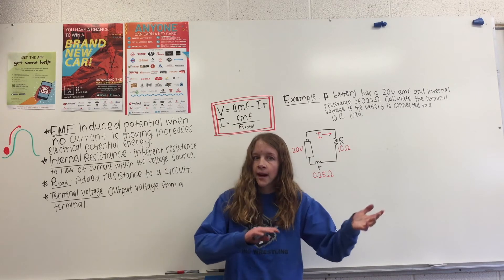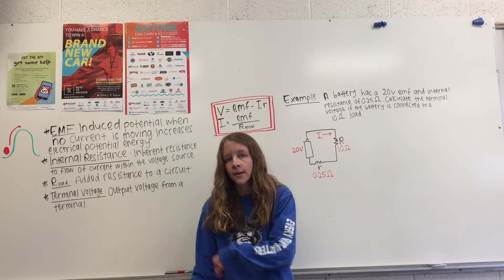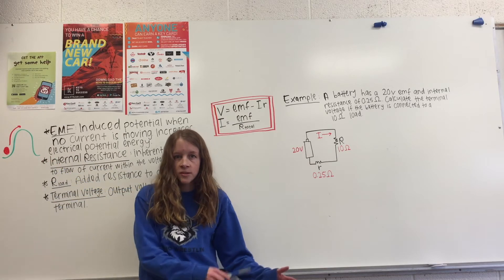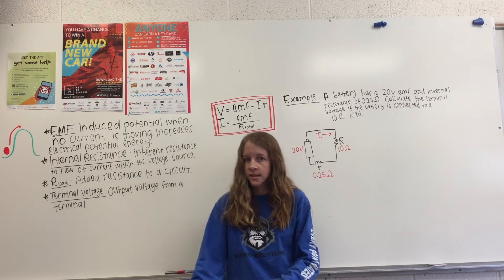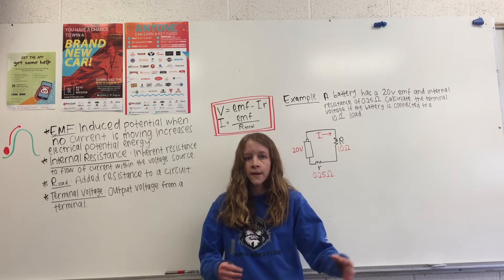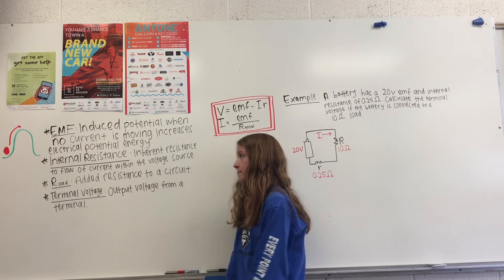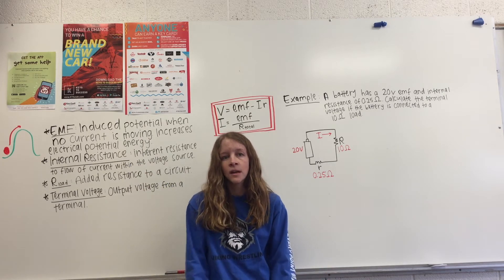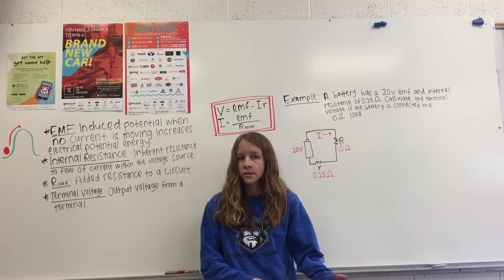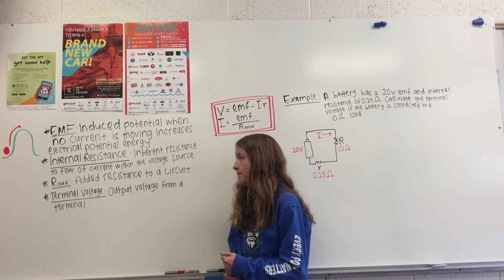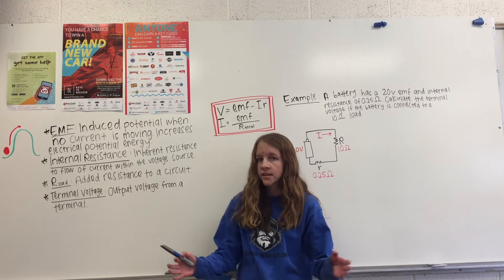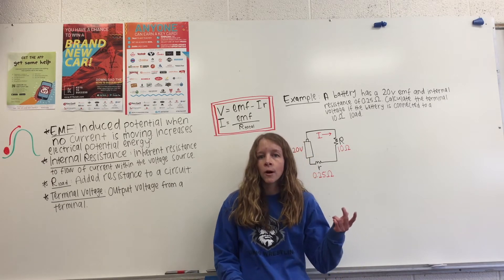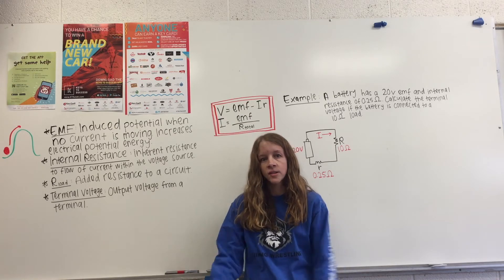On the other side of that, resistance is going to decrease the potential energy. So if the ball was falling down the hill, then it would be losing potential energy, and that's what resistance does. We're going to be using two different kinds of resistance today. We have our internal resistance, which is the inherent resistance that comes within a voltage source, and then we have our R-load, which is any resistance that is added to a circuit. So this could come in the form of a light bulb or just anything that is added to the circuit that resists the current.